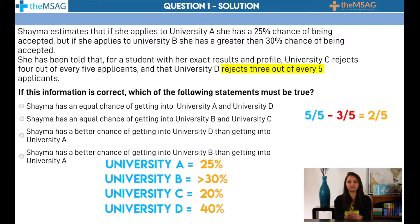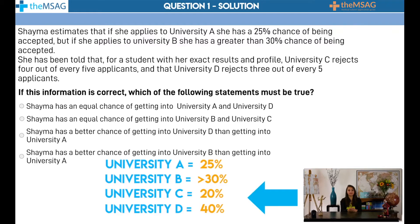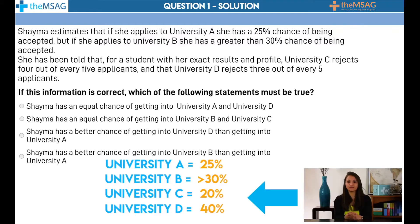For University D, I worked this out in my head by doubling both 2 and 5 to make the denominator 10. The fraction 4 out of 10 can then be easily converted to 40%. We now have four acceptance rates, and the only conclusion that must follow is that Shima has a better chance of getting into University D than getting into University A.